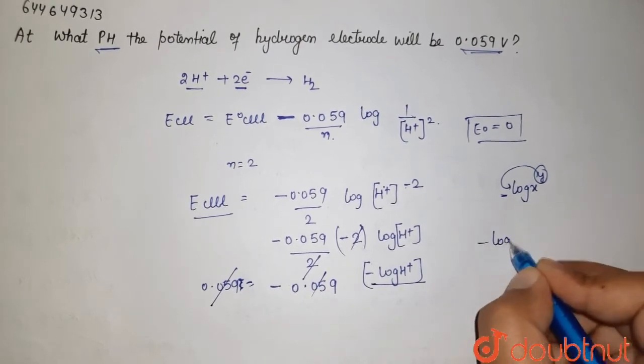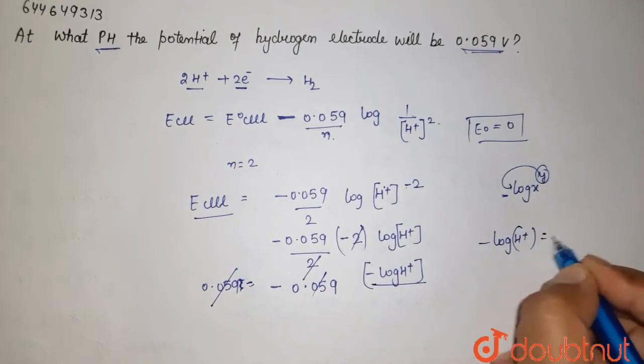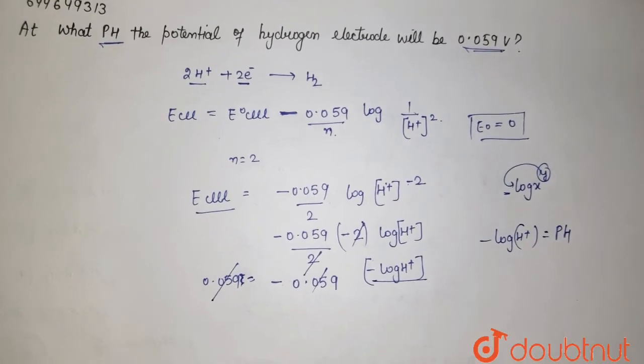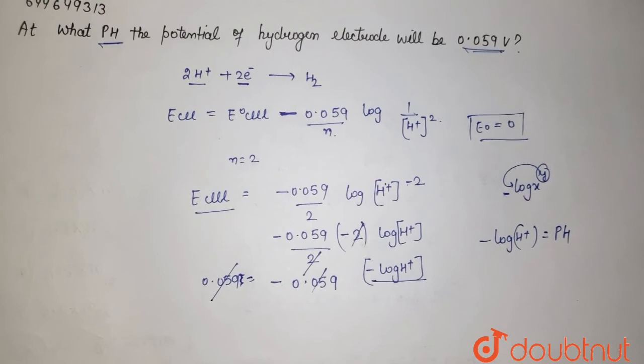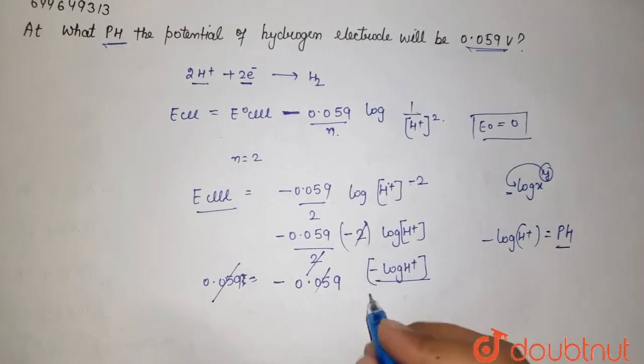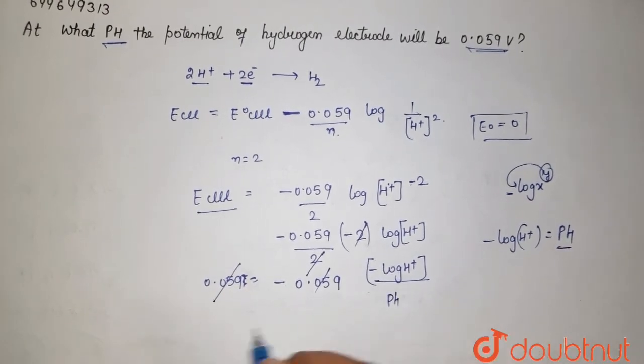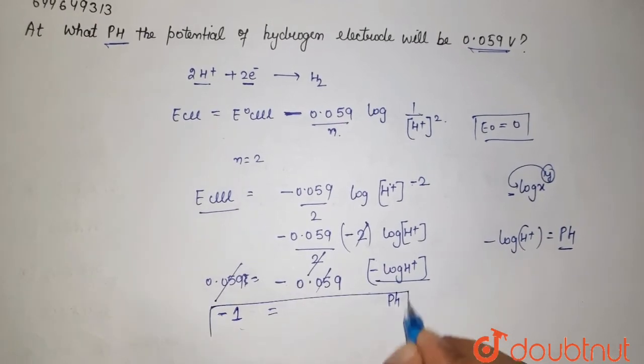and we're left with minus log [H⁺] concentration, which equals pH. So this can be written as pH. After cancellation, we get pH equals minus 1,